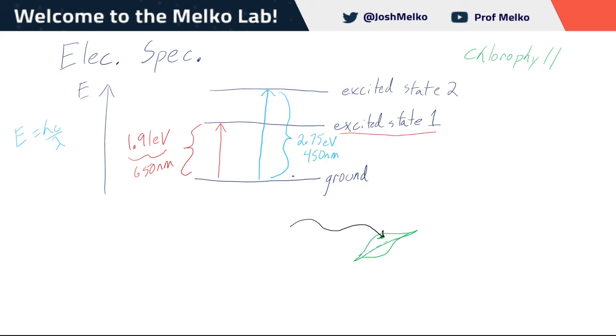For chlorophyll with this ground electronic state, it's only going to absorb red and blue light. So while there's maybe red light and blue light and green light striking this chlorophyll molecule, only the red light and the blue light is absorbed.